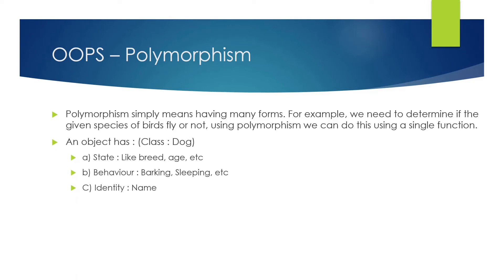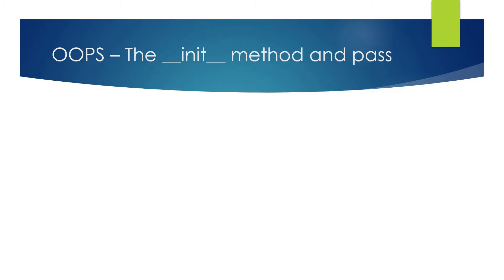Let's consider a class 'dog' — it has state, behavior, and identity: breed, age, barking or sleeping, and so on. If you were to have a bird class, the state could be breed, age, or weight. Behavior would be things like eating and flying, and the identity would be a name like sparrow or pigeon.